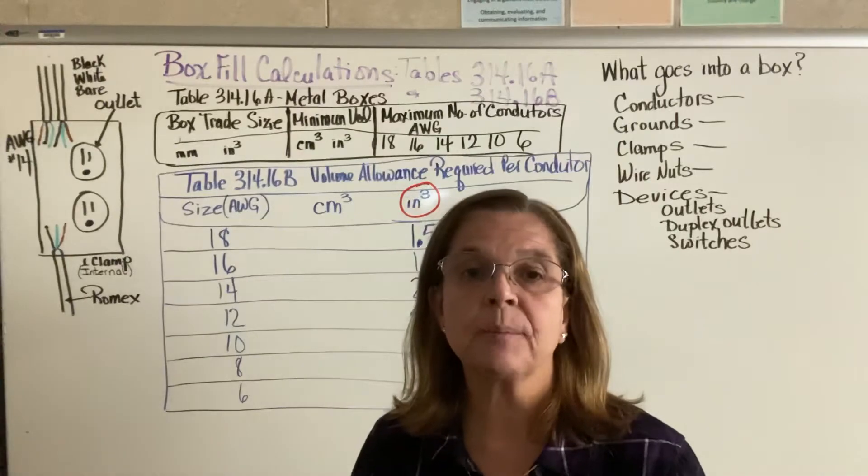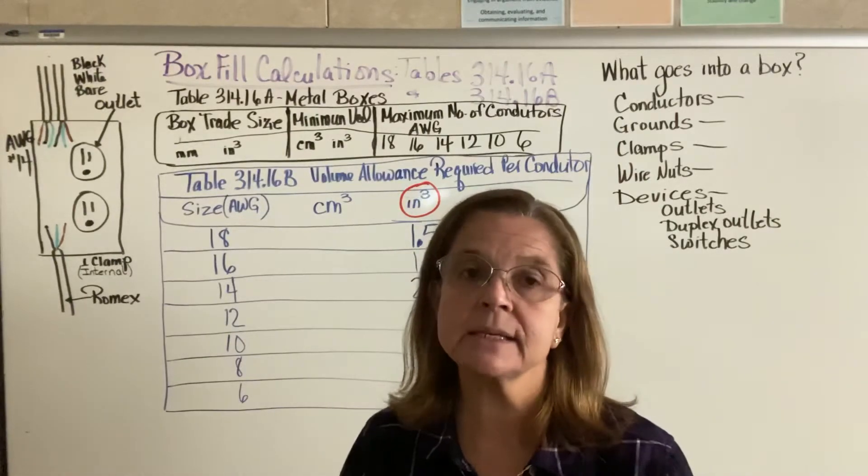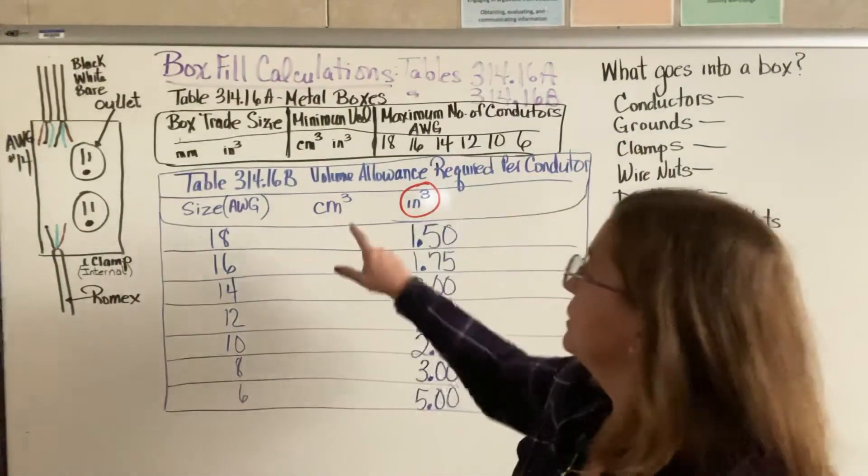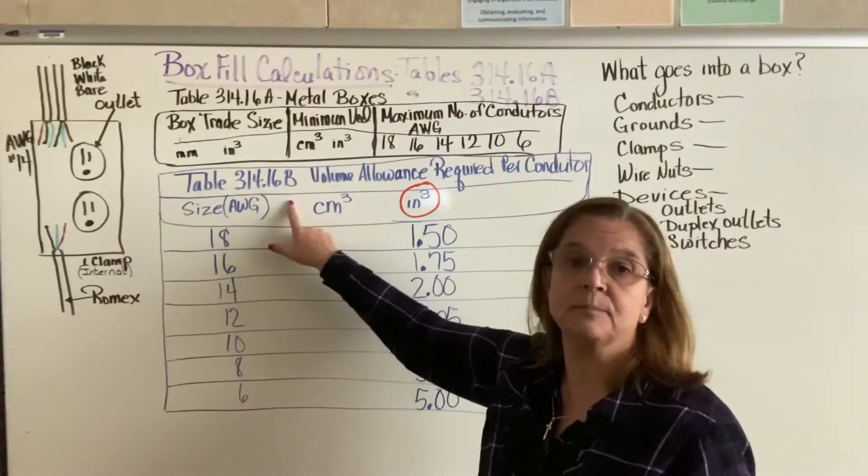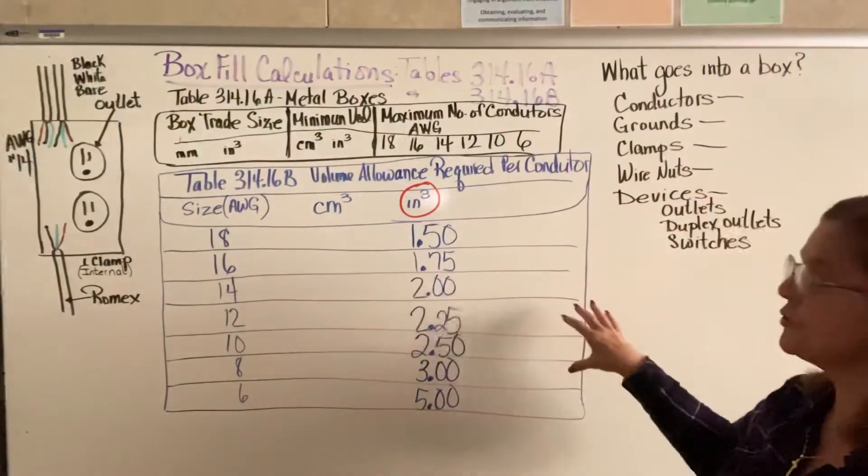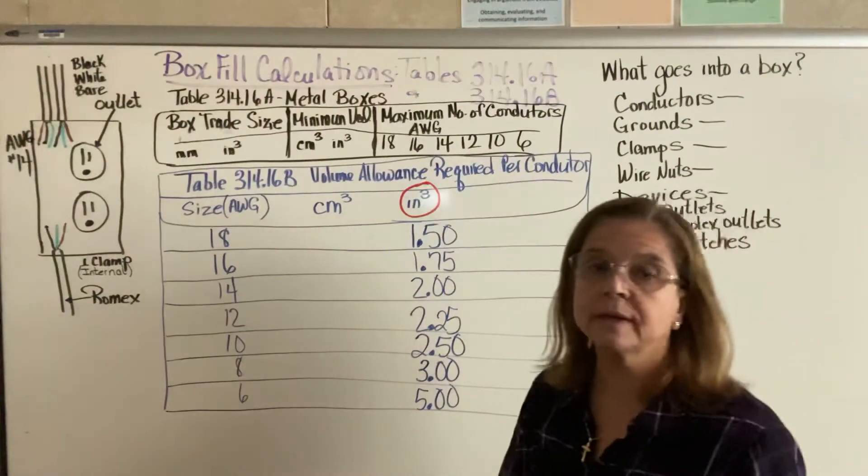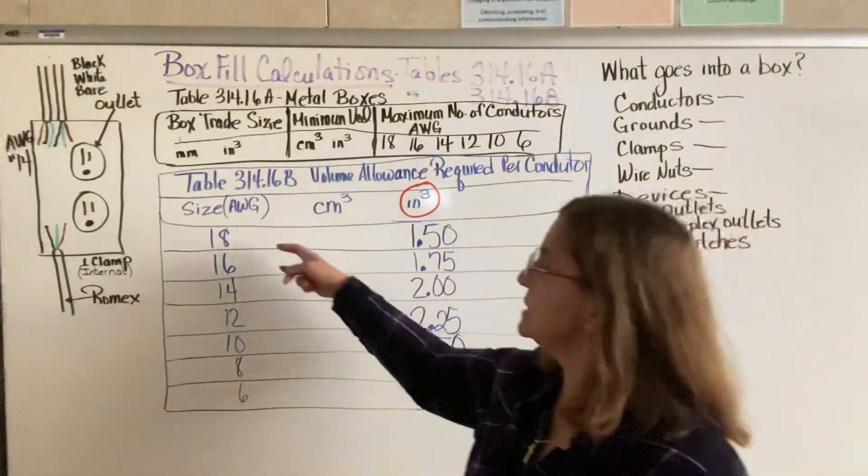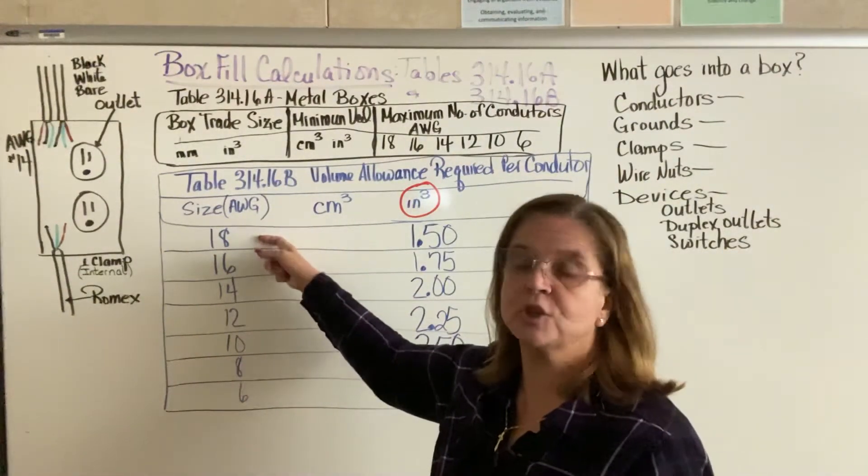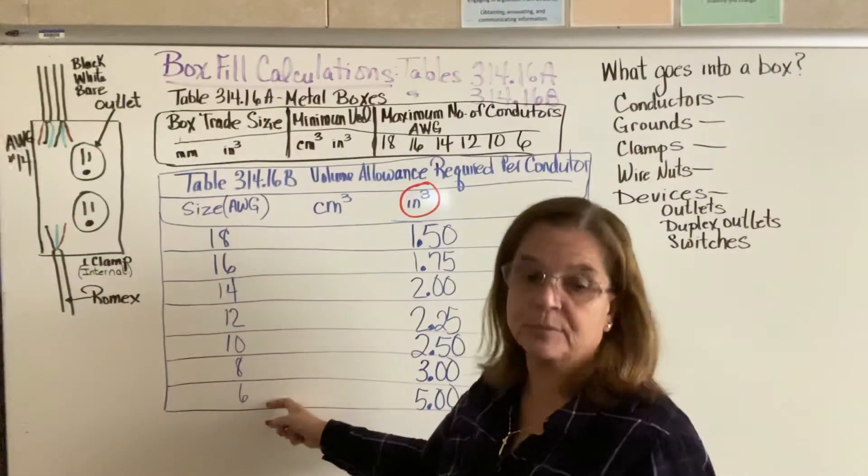What I really want to talk about today is the second table, 314.16B. I pretty much drew most of the table out for you here. It starts at size 18 AWG and goes down to number 6.